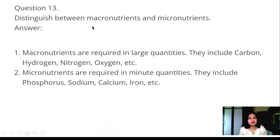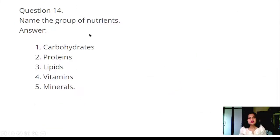Question 13: Distinguish between macronutrients and micronutrients. Answer: Macronutrients are required in large quantities. They include carbon, hydrogen, nitrogen, oxygen. Micronutrients are required in small quantities. They include phosphorus, sodium, calcium, iron. Question 14: Name the groups of nutrients. Answer: Carbohydrates, proteins, lipids, vitamins, minerals.